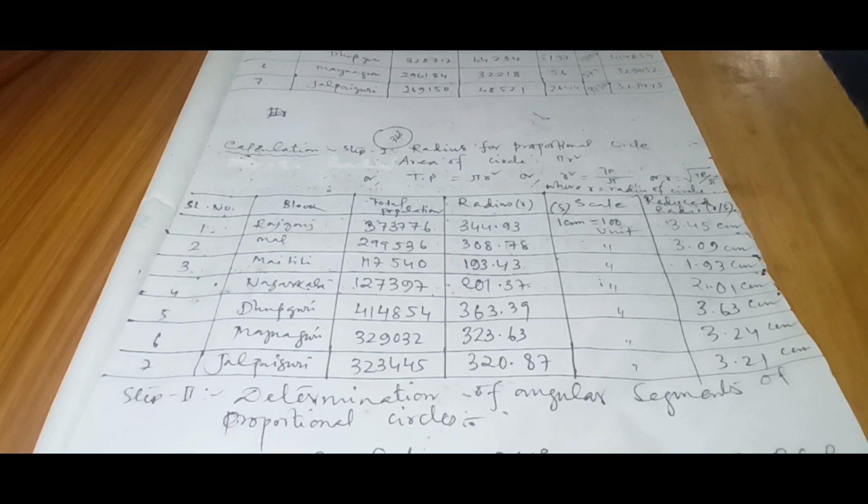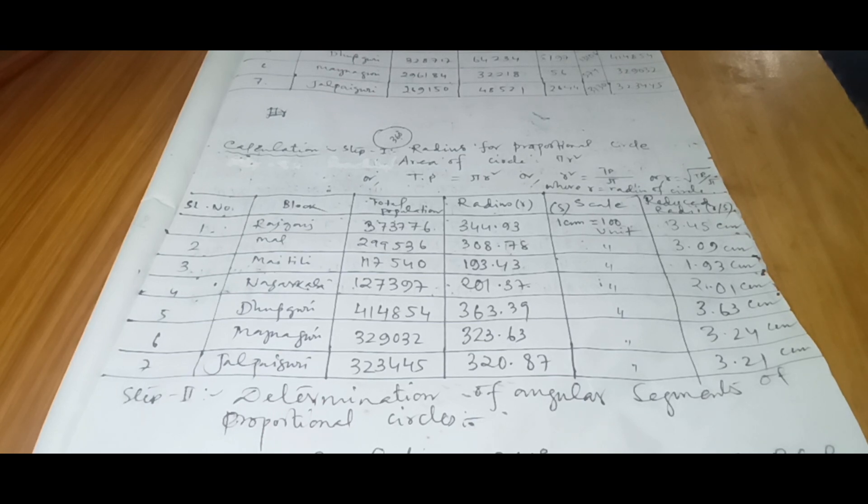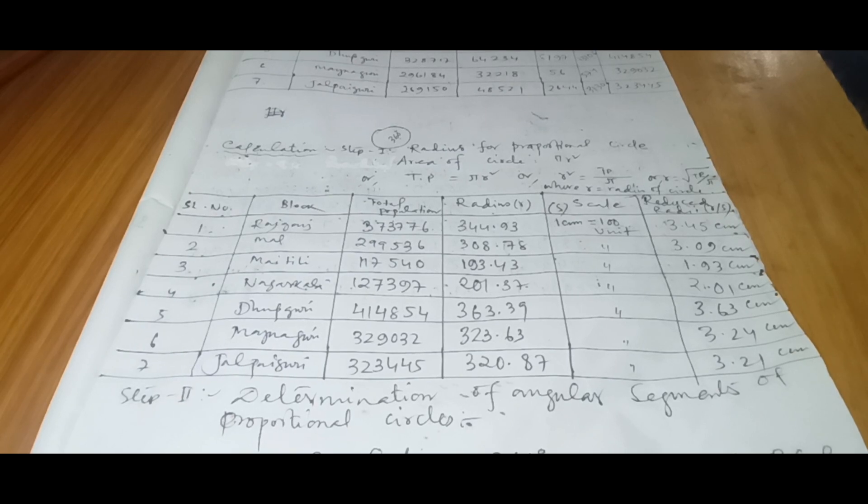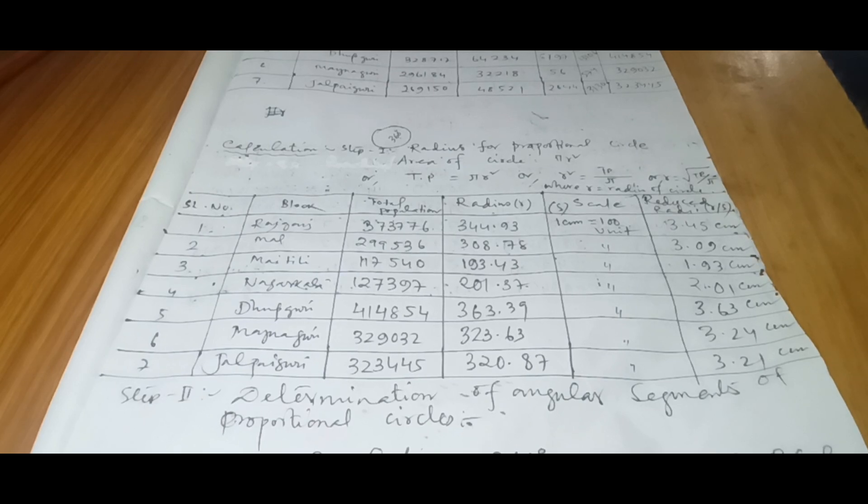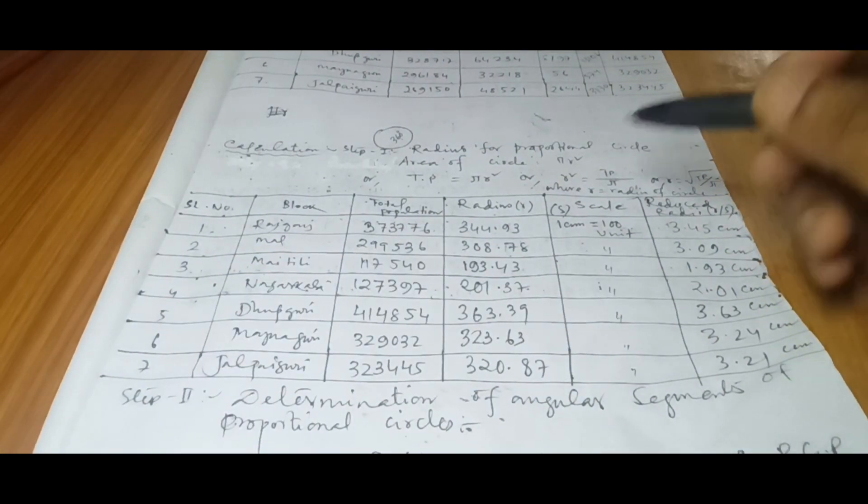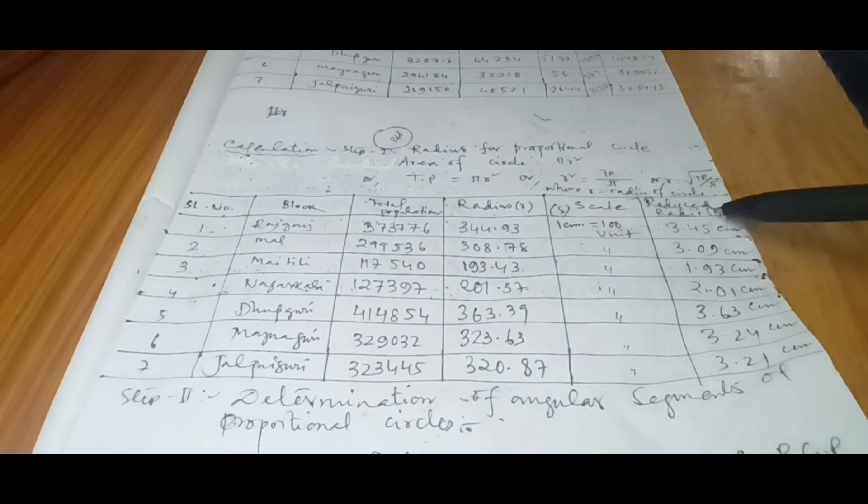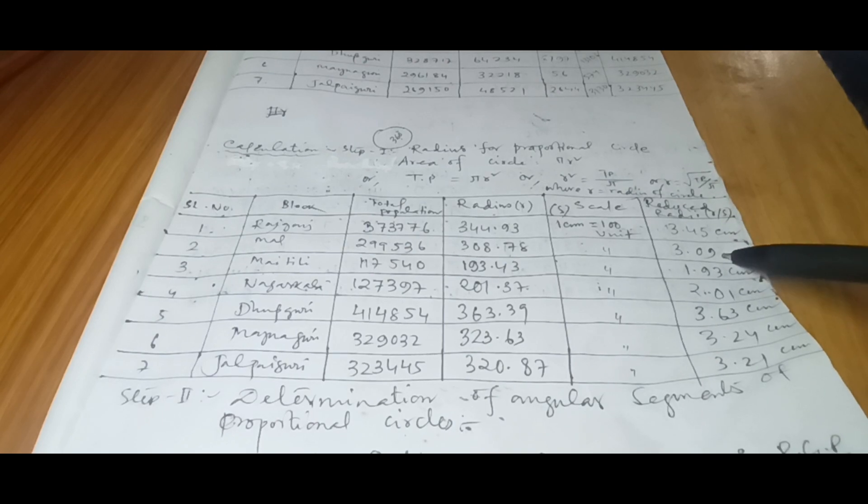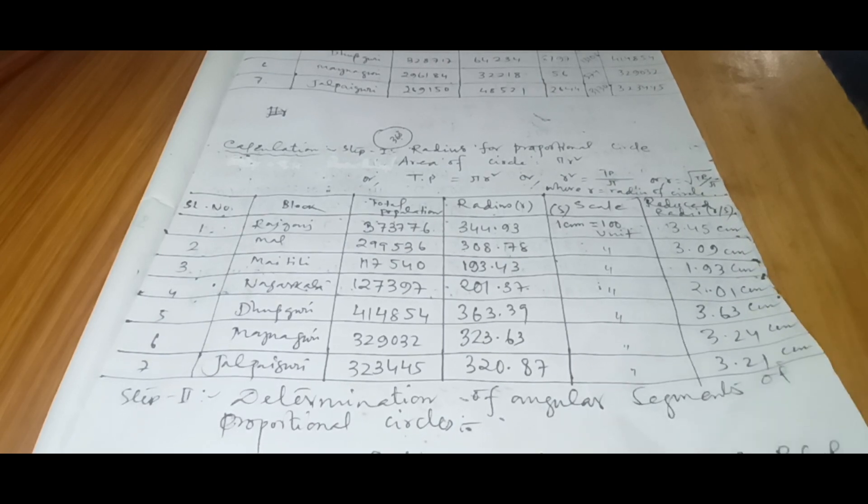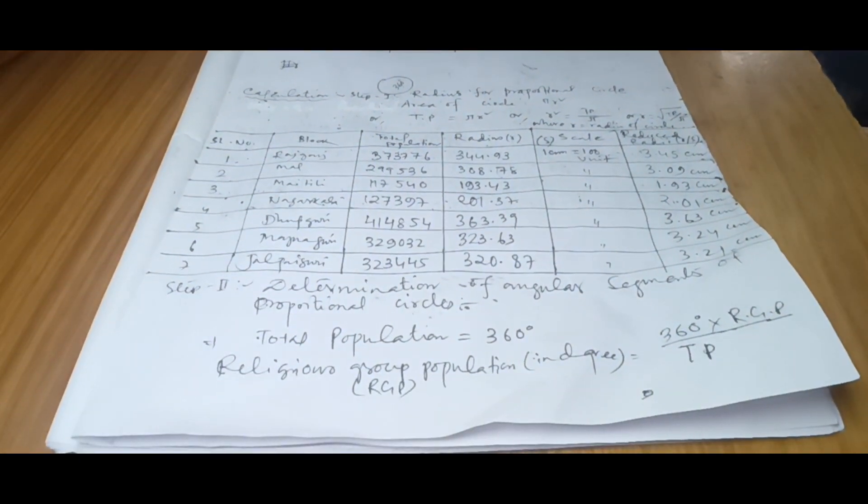Taking scale into perspective, if the area is big, then it will be difficult for you with a complicated scale. More number of units will be beneficial for you. For example, I have taken 100 units equals one centimeter. So I have divided all this radius by 100. When I divide by 100, I am getting 3.45, 3.09, 1.93, like that. So these are all the radiuses in centimeter.